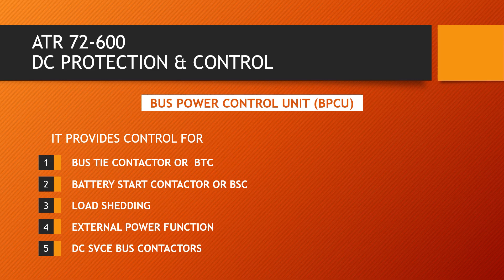Now I will discuss the Bus Power Control Unit, BPCU. It provides control for the BTC — the Bus Tie Contactor. The BTC enables DC Bus 1 and 2 to be online when only one generator is operating, or when the aircraft is powered from external power, and that is controlled by BTC automatically.